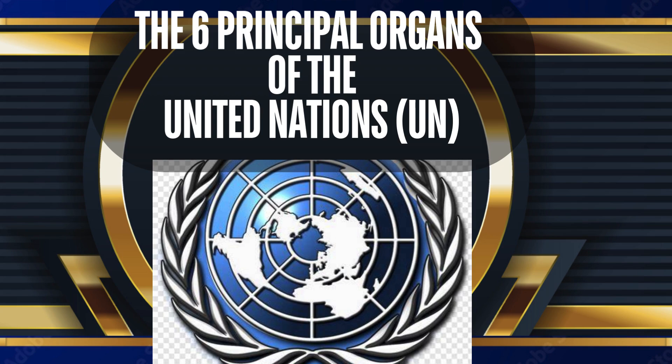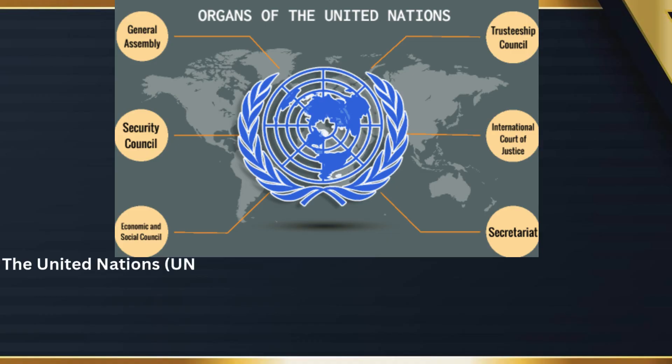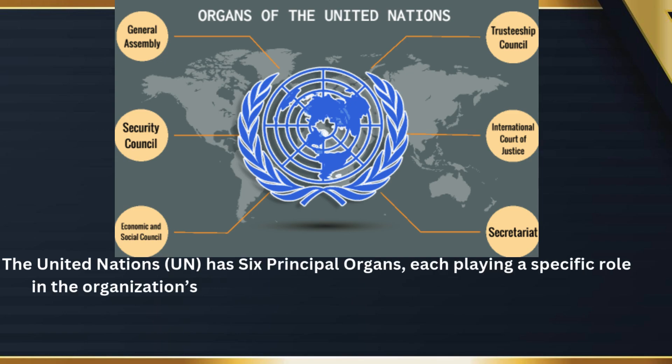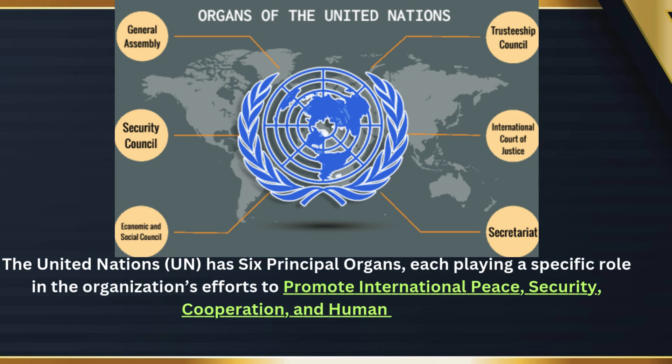The Six Principal Organs of the United Nations. The United Nations has six principal organs, each playing a specific role in the organization's efforts to promote international peace, security, cooperation, and human rights.